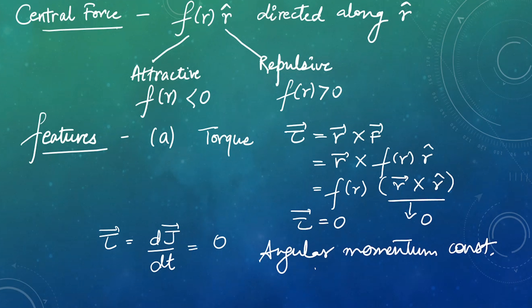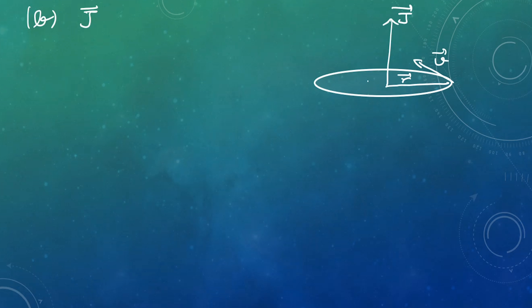That means our angular momentum is conserved. That is our first feature. Let's move to the second feature. Our angular momentum is R cross P, where P is linear momentum.